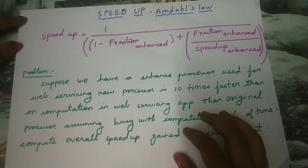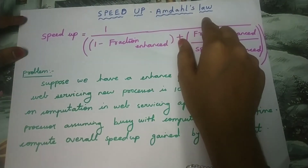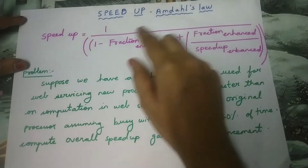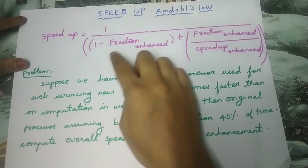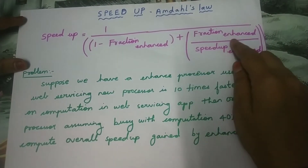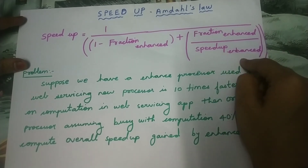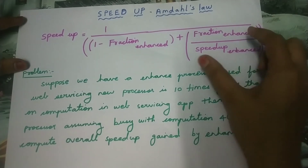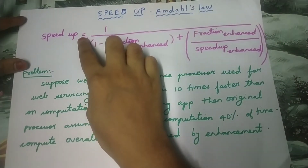In this video, let us learn to calculate the speed-up which comes in Amdahl's Law. The formula for speed-up is: 1 divided by (1 minus fraction enhanced) plus (fraction enhanced divided by speed-up enhanced). Using this formula we can calculate the speed-up.